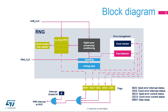This simplified block diagram of the RNG shows its basic functional and control modules. The random number generator is based on an analog circuit made of several ring oscillators whose outputs are sampled, then XOR'd, to generate the seeds that feed a digital post-processing block able to produce four 32-bit random numbers per round of computation. The sampling of analog seeds is clocked by a dedicated RNG clock signal so that the quality of the random number is independent of the HCLK frequency. The contents of the post-processing block are transferred into the data register through a four-word FIFO.